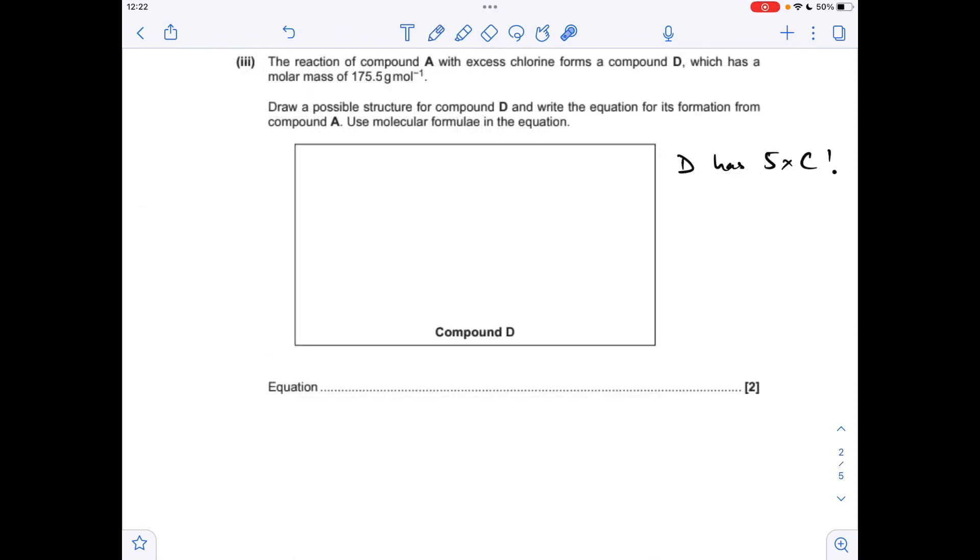And the next part, compound D's obviously still got its five carbons, so if we take 60 from the 175.5, that gives us 115.5. So to find out how many chlorines are in there, we divide that by 35.5, we get just over three, so there must be three chlorines in the molecule. So that means the molecular formula for D is going to be C5, Cl3, H9.